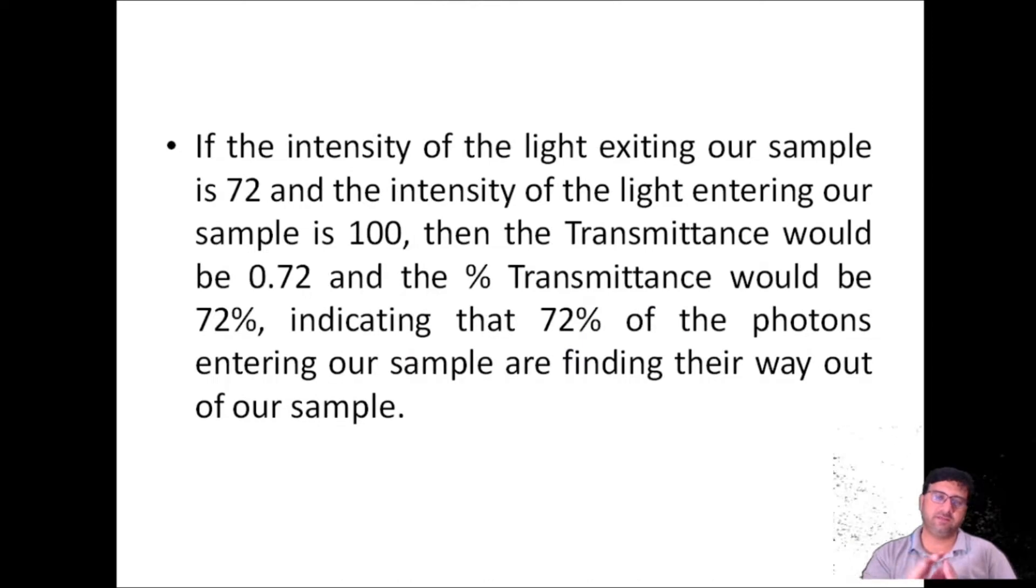If the intensity of the light exiting our sample is 72 and the intensity of the light entering our sample is 100, then the transmittance would be 0.72 and the percent transmittance would be 72%, indicating that 72% of the photons entering our sample are finding their way out of our sample.